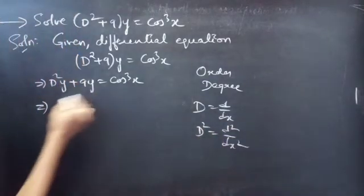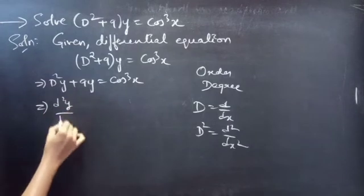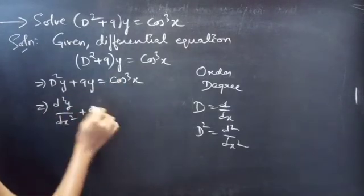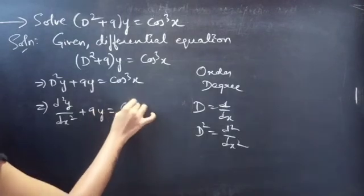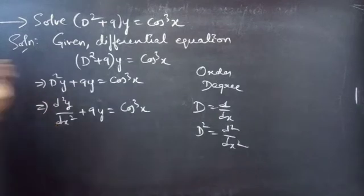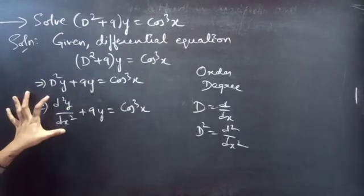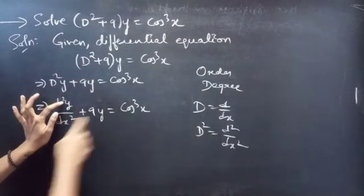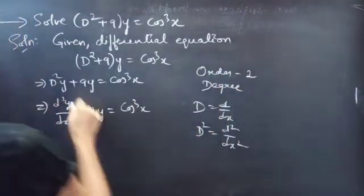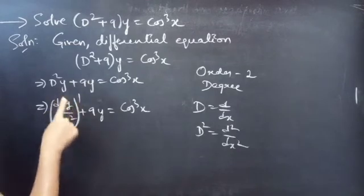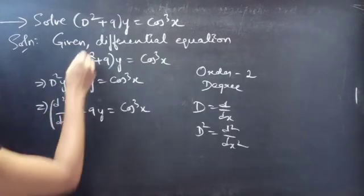Then we can write the equation as d²y/dx² + 9y = cos³x. Identify the highest derivative here — d²y/dx² is the highest derivative, so 2 will be our order. And the highest power of the highest derivative is our degree, which is 1.